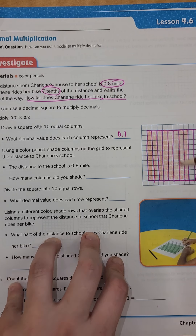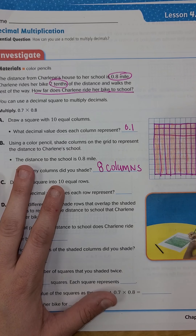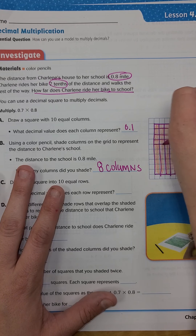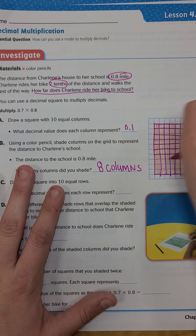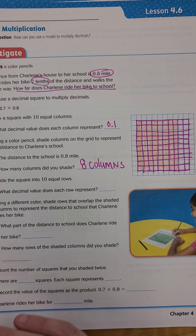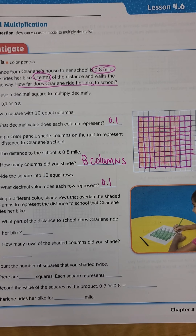Now it says divide the square into ten equal rows, so we're going to divide it up into ten equal rows — one, two, three... all the way to ten. Each of these rows represents one tenth. Now it says using a different color, shade the rows that overlap the shaded columns to represent the distance to school that Charlene rides her bike.